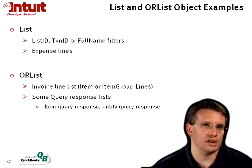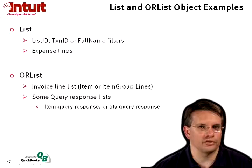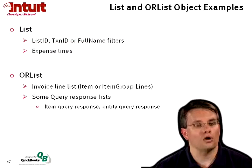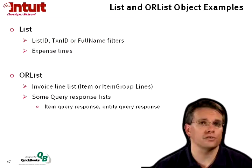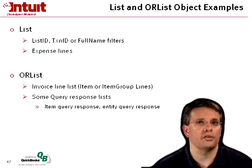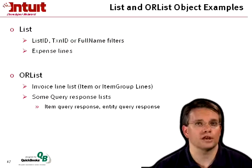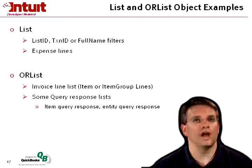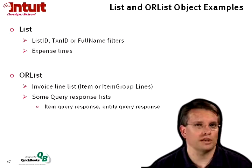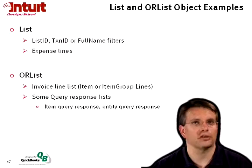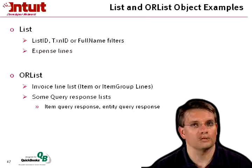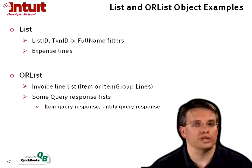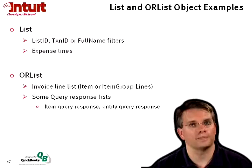For an example, there's the list ID, transaction ID, and full name filters that I talked about a moment ago, or expense lines or invoice lines. Expense lines specifically are list items. In an Or list, you have, for example, the invoice line list that I talked about, where you can have an item or an item group line. Each item within that list is either an item or an item group line.